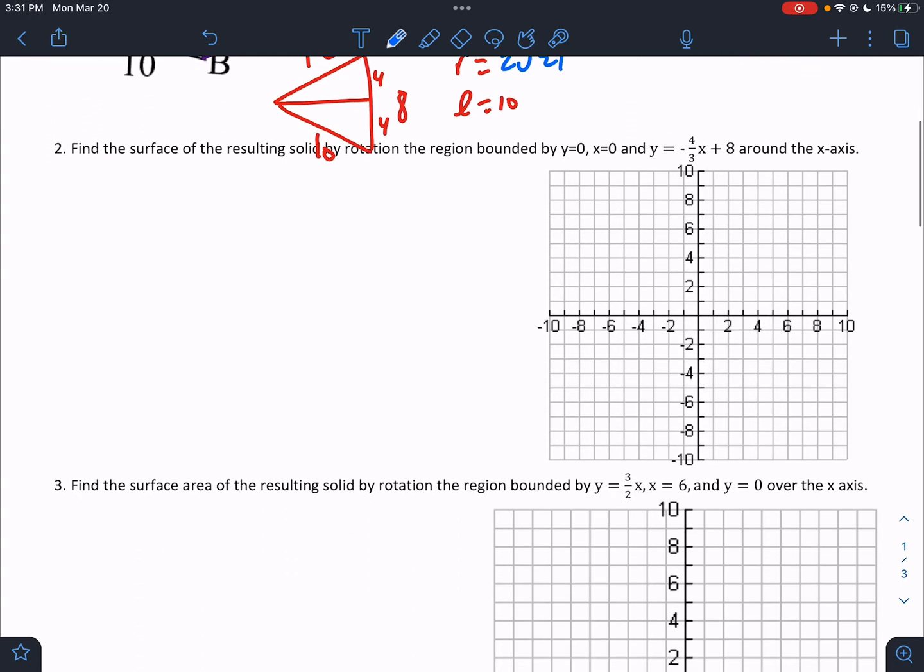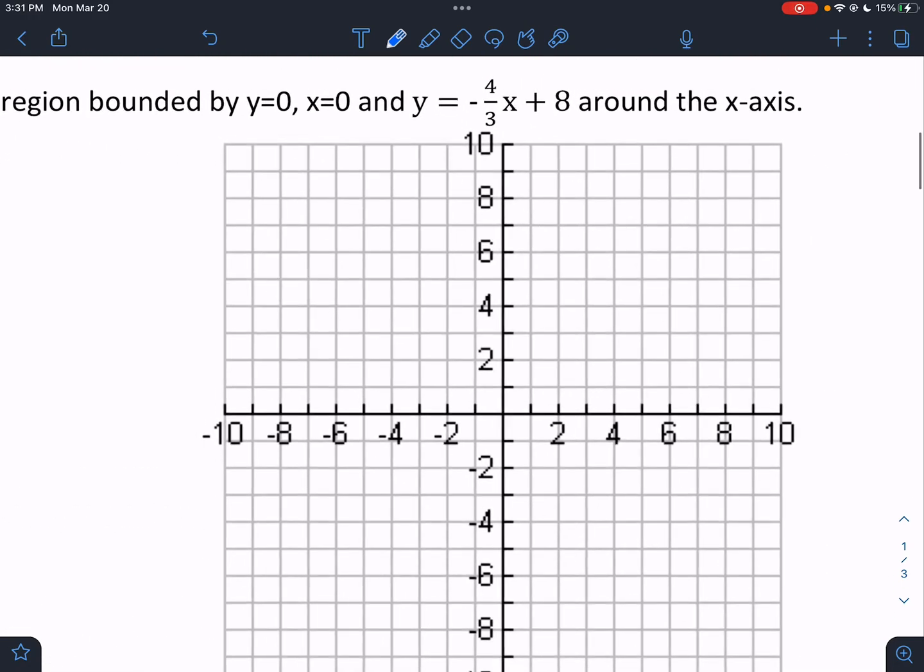Okay. Let's do another one here. We have y equals 0, horizontal. X vertical. Negative 4 thirds x plus 8. Down 4 over 3. Down 4 over 3. So what we're doing is working with this triangle. I'm going to delete the excess because it can get kind of confusing when we start spinning it.